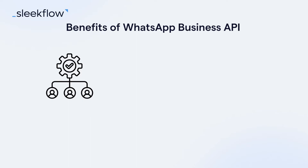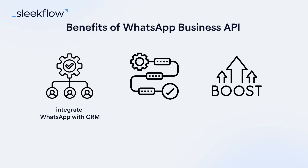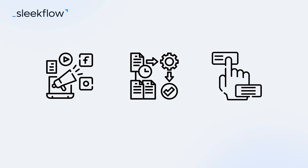The WhatsApp Business API is designed for businesses that require a more robust and scalable solution. With the API, businesses can integrate WhatsApp with customer relationship management software, streamlining communications and boosting team productivity. One of the key advantages is the ability to have multiple users accessing the same WhatsApp Business account, with enhanced broadcast capability, allowing messages to be sent across all linked devices without contact limits, eliminating the need for additional software.